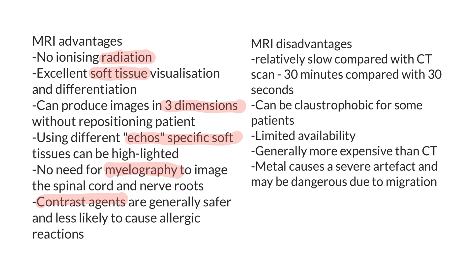Disadvantages of the MRI are that it is relatively slow compared with CT scans. In MRI, you can have scans taking 30 minutes per anatomic site, compared with about 30 seconds with a CT scan. This isn't really an issue for our patients, but it can be claustrophobic for human patients. That long cylinder, which is only about 400 or 500 millimeters in diameter and up to a meter and a half to two meters long, can make a human patient feel quite claustrophobic.